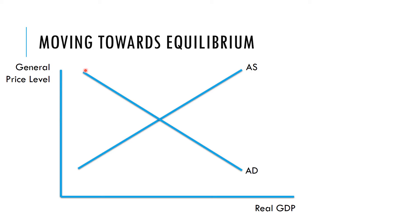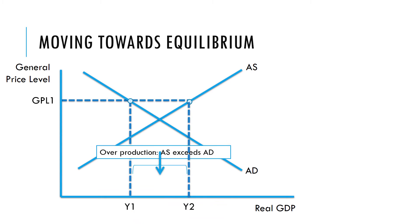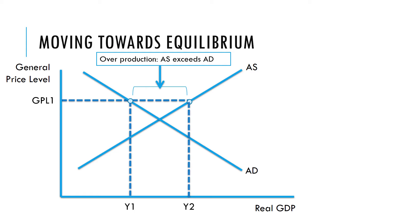We have the level of aggregate demand and the level of aggregate supply on our diagram, with general price level and output on the axes. Imagine the current price level is price level 1. At price level 1, planned spending in the economy would be at output level Y1, while planned output would be at Y2. So at this price level we have a situation of planned overproduction — businesses plan to produce more than buyers plan to spend.